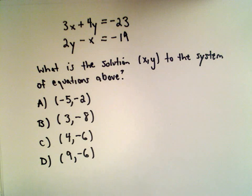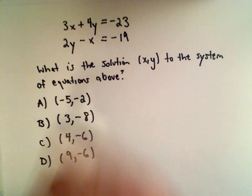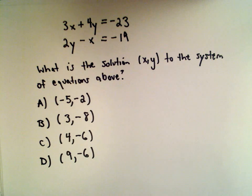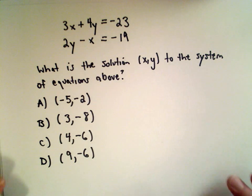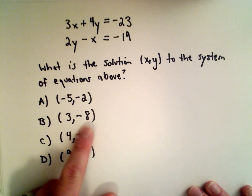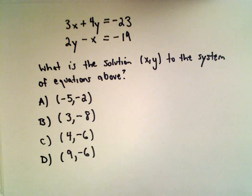In this example, we have a system of linear equations: 3x plus 4y equals negative 23, and 2y minus x equals negative 19. What is the solution to this system? The answer choices are: A) negative 5 comma negative 2, B) 3 comma negative 8, C) 4 comma negative 6, and D) 9 comma negative 6. Let's talk about an algebraic way to solve this.